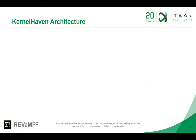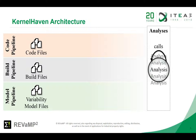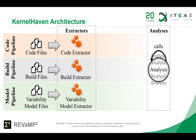Before we start with the demonstration we need an understanding of KernelHaven. KernelHaven is designed to extract variability information from different information sources. This happens in parallel processing pipelines. Based on this information KernelHaven provides support for various analyses. The information extraction can be realized with different extractors. These extractors may be exchanged or disabled according to the analysis requirements or to the artifact types.